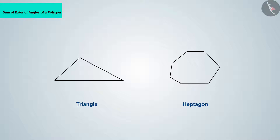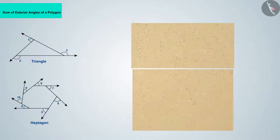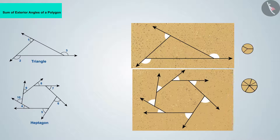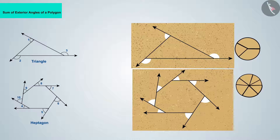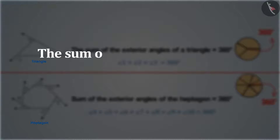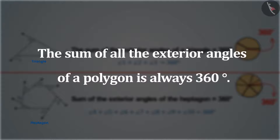If we place other polygon figures on cardboard by cutting their external angles, we can see that they also form a circle like the hexagon. Therefore, the sum of the external angles of any polygon is also 360 degrees. Consequently, the sum of all exterior angles of a polygon is always 360 degrees.